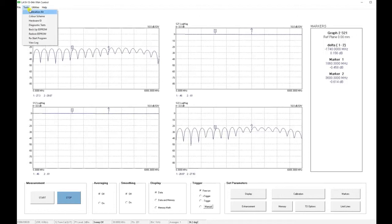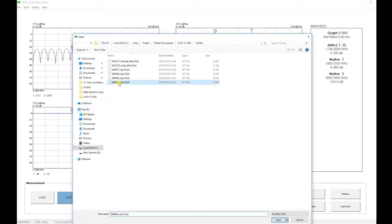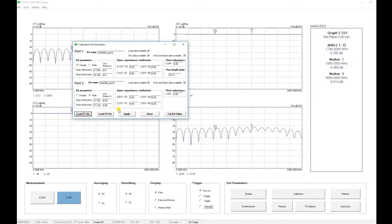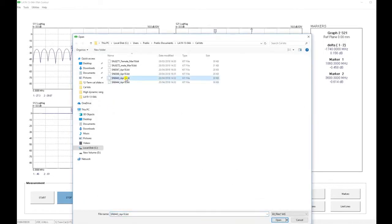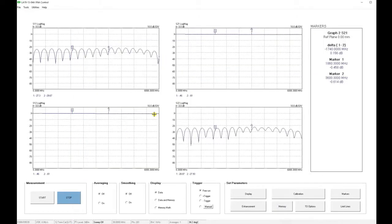The first thing we need to do is to select our calibration kits. We are going to use the serial number 8444 kit on port 1, that's a female kit, and the male kit 8443 on port 2. We load those kits, and we are ready to begin our calibration.